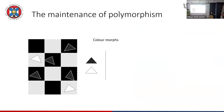One of the conventional explanations is that polymorphism is an adaptation to a polymorphic environment. With a checkerboard background of black and white patches, if you're intermediate — grey — you're mismatched on both backgrounds, you're obvious wherever you go. So there's selection that drives them to either be black or white, and you end up with two colour forms.